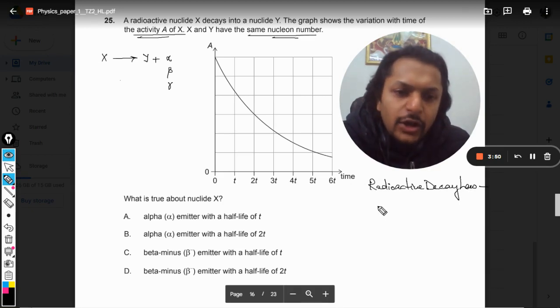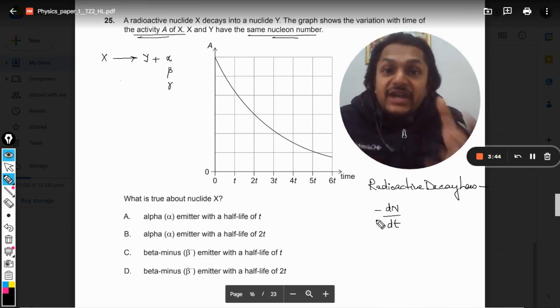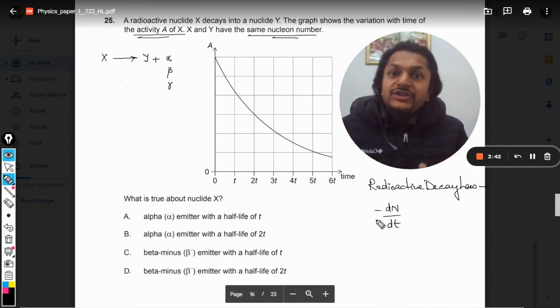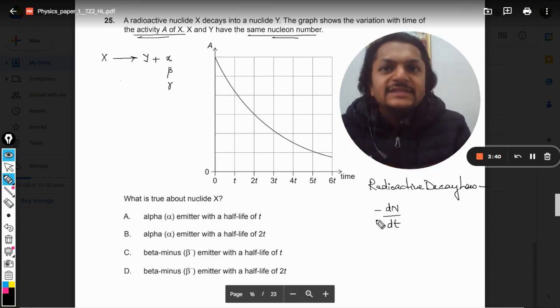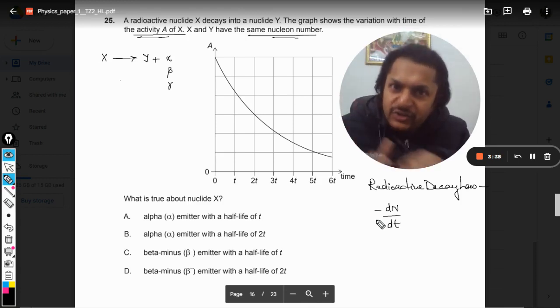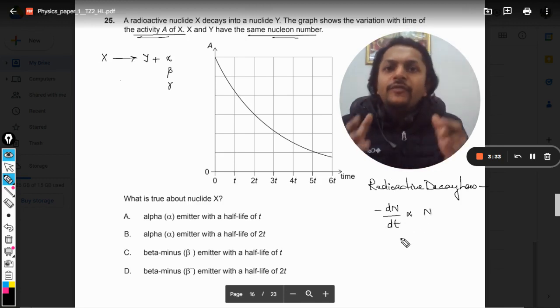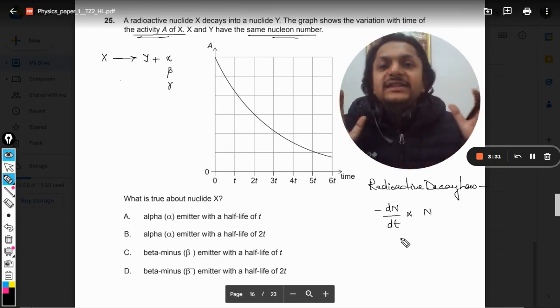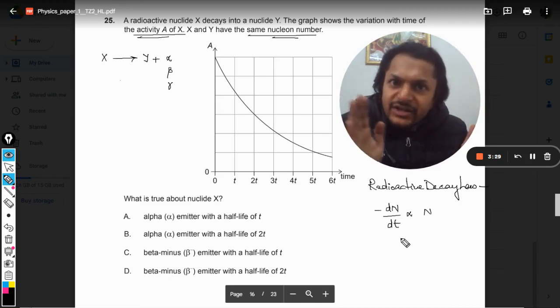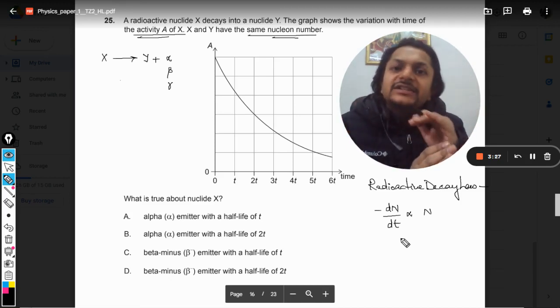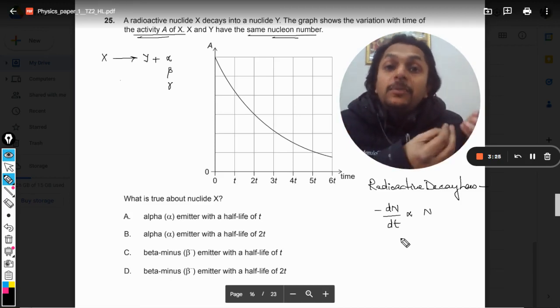What is radioactive decay law? According to this law, the rate at which the material or the sample is decaying, or the rate at which the number of nuclei left in the sample is reducing, is found to be directly proportional to the number of nuclei left in the sample. So lesser is the number left, lesser will be the rate at which they are breaking.